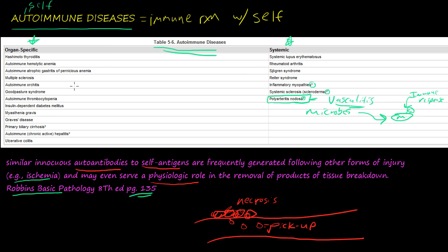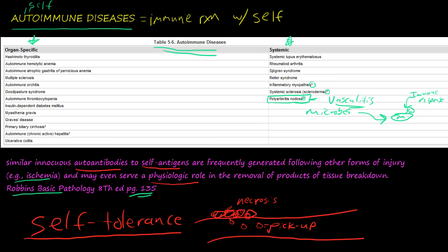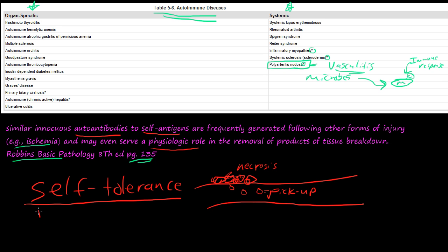The autoimmune diseases on our list aren't 100% confirmed. Before we talk about some of these diseases in detail, we need to discuss the concept of self-tolerance — how B cells and T cells are trained or mature. We'll discuss self-tolerance and then go into the pathogenesis of these diseases through these mechanisms. See you in the next video.